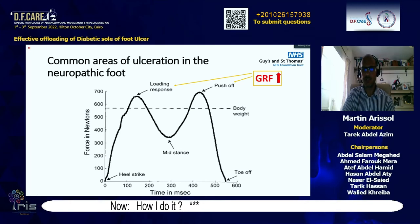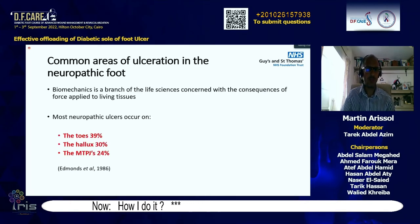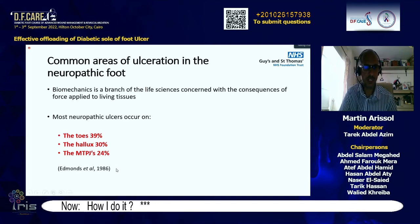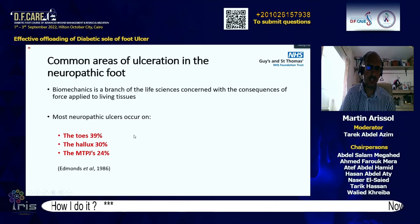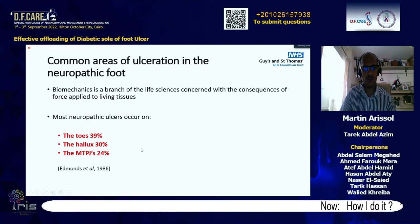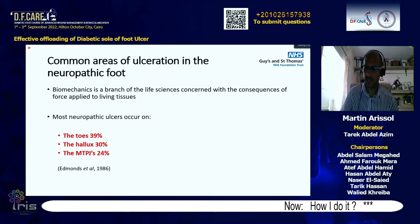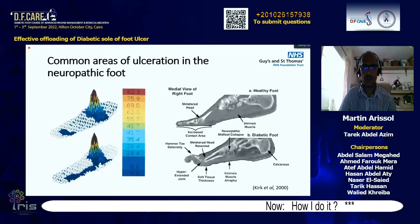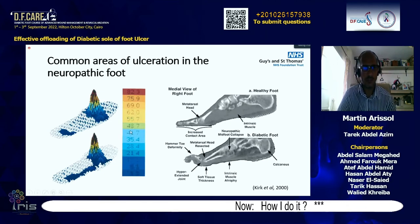Most neuropathic ulcers, as established by Mike Edmonds in 1986, occur around the toes at about 40%, at the hallux at 30%, and the rest of the metatarsals at 24%. Most ulcerations lead to amputations mainly because this is where the microcirculation becomes calcified and occluded. Comparing a healthy foot to a diabetic neuropathic foot, reaction forces are more spread in the healthy foot versus concentrated at the first metatarsal where there is loss of the fatty pad and muscle atrophy.